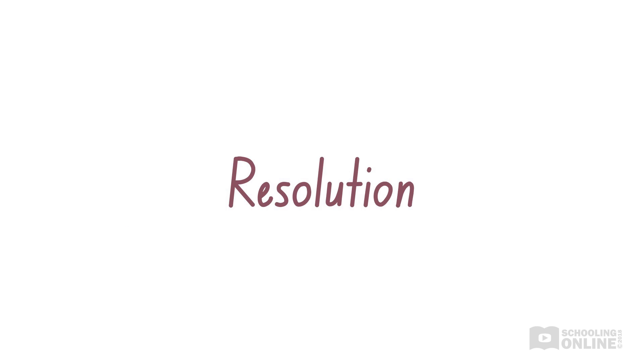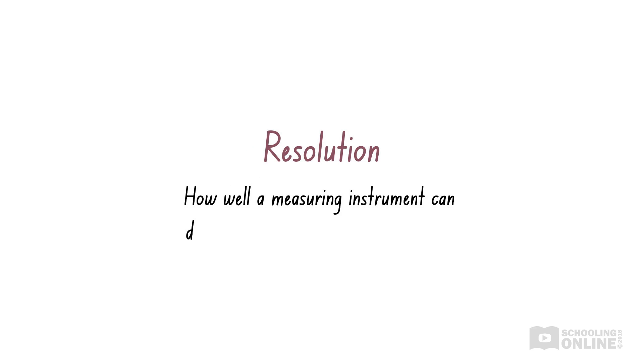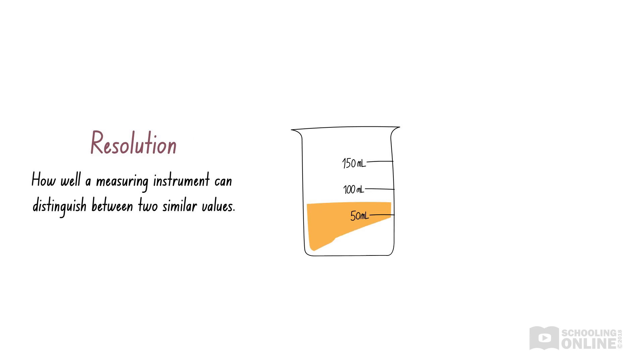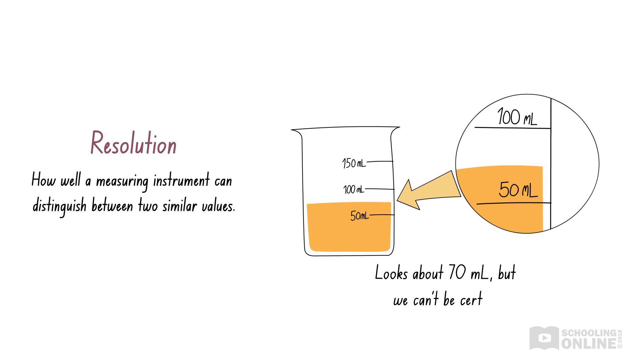Accuracy can also be affected by the resolution of instruments, which refers to how well the instrument can distinguish between two similar values. For example, let's look at this glass of orange juice. Using this beaker, which has increments of 50 milliliters, we can say the volume of orange juice is about 70 milliliters. However, we can't be certain about the value since it lies somewhere between the 50 and 100 milliliter mark. There is no way that we can be certain that the volume is exactly 70 milliliters as opposed to 73 or 67 milliliters.